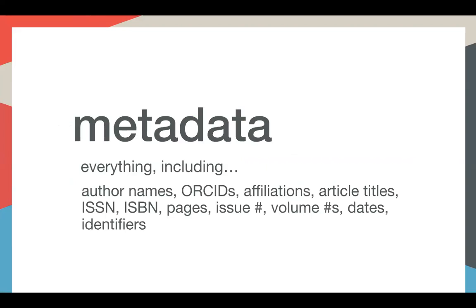We talk a lot about metadata at Crossref — really what we mean is information about the piece of content you're registering. That includes author names, ORCID IDs, the affiliation of the authors, the title of the article, ISSNs, pages, issue numbers, and identifiers like the DOI. What we need is enough to uniquely identify a paper as being different from similar papers on similar subjects published elsewhere on the web, so it's clear what is being cited in a reference.